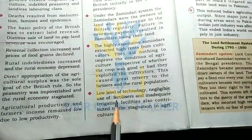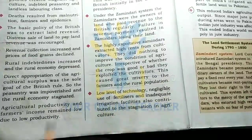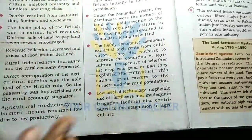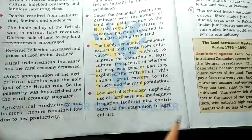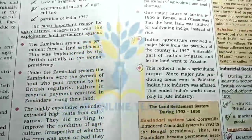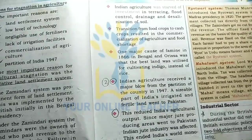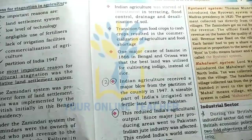Low level of technology, negligible use of fertilizers, and inadequate irrigation facilities contributed to agricultural stagnation. Indian agriculture also lacked investment in terracing, flood control, drainage, and desalinization of soil.